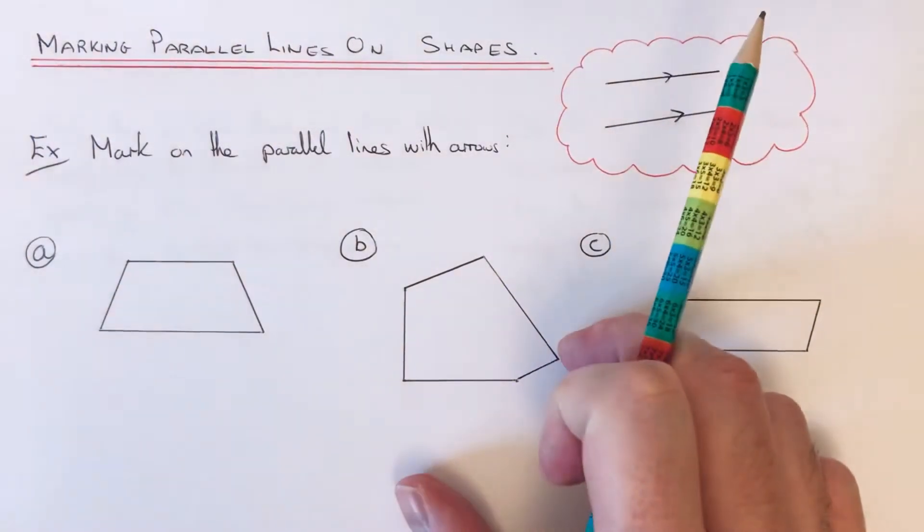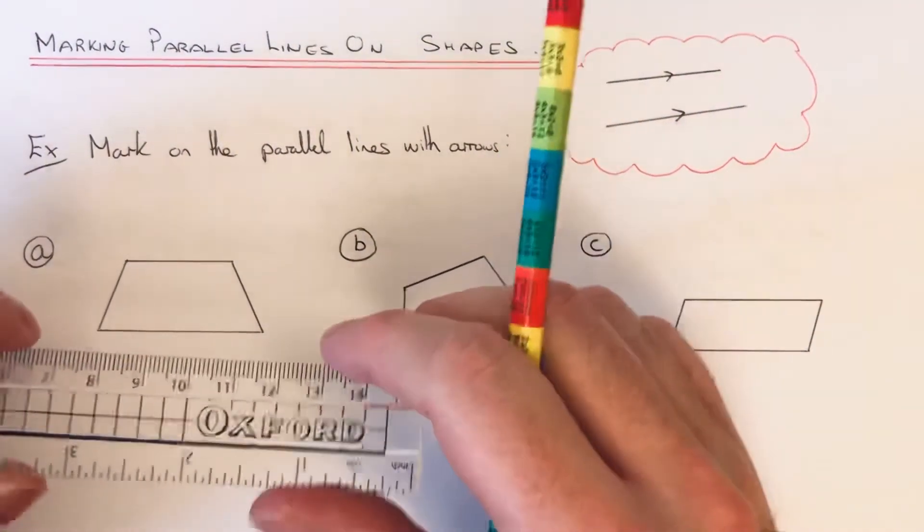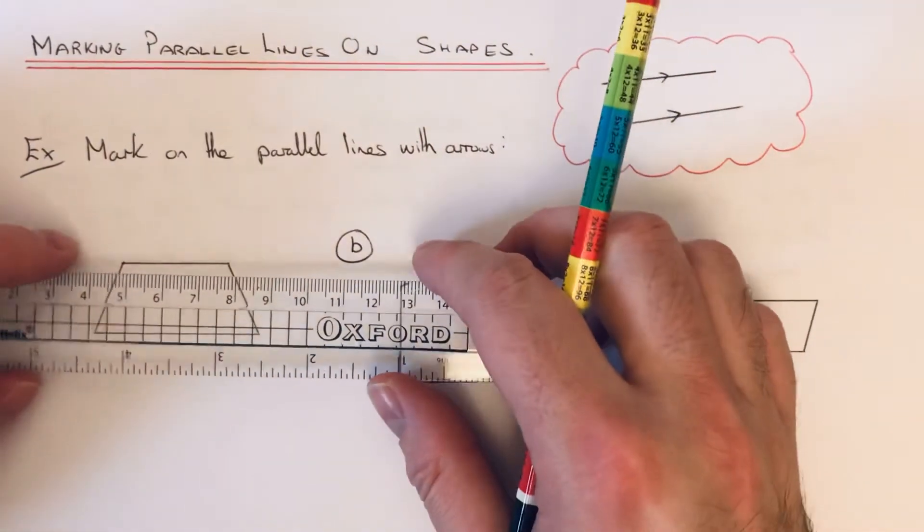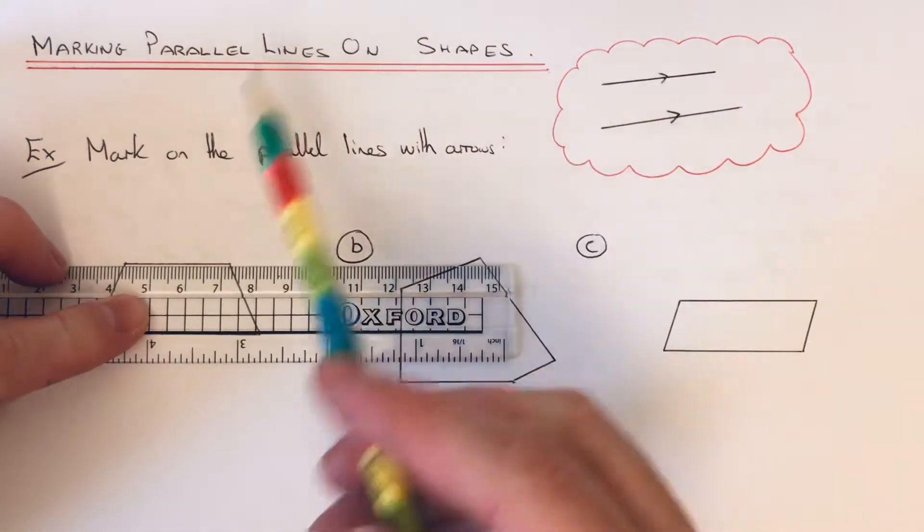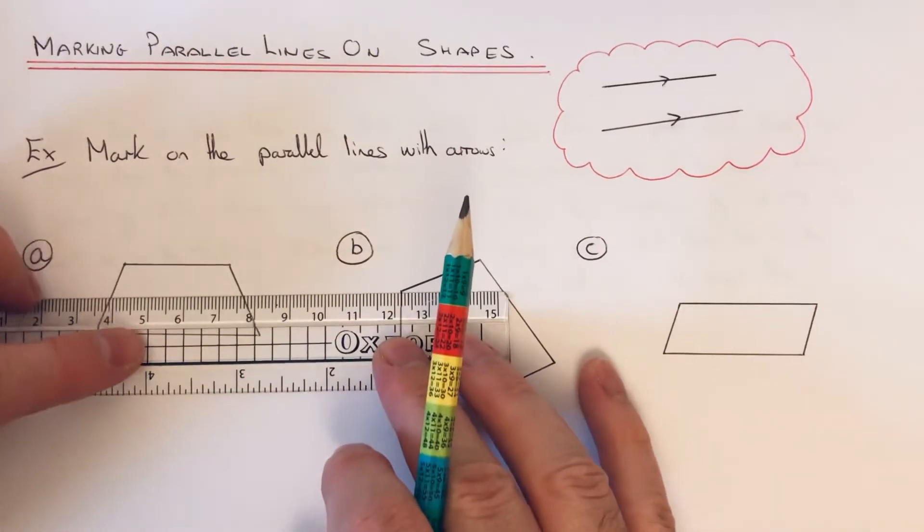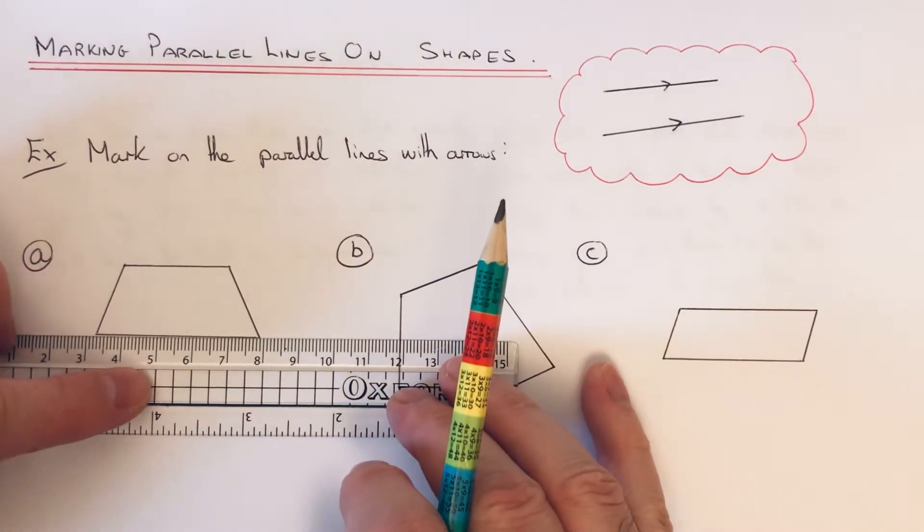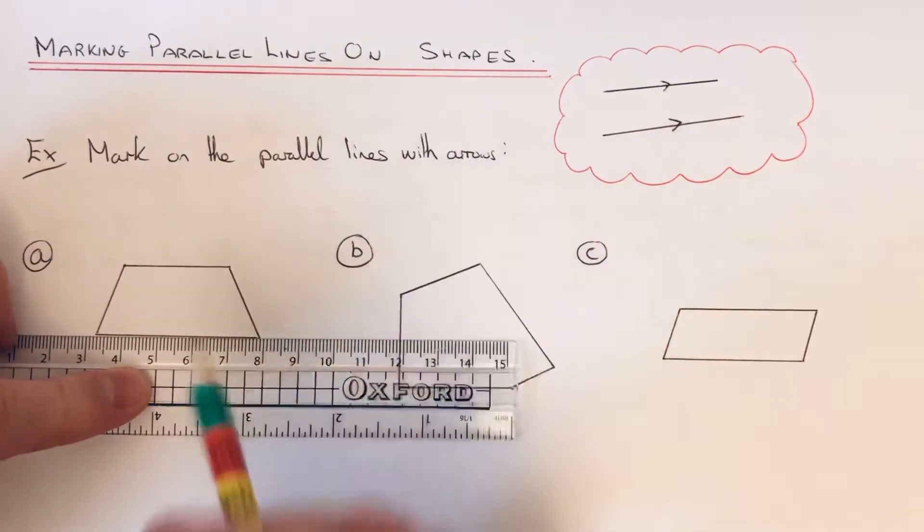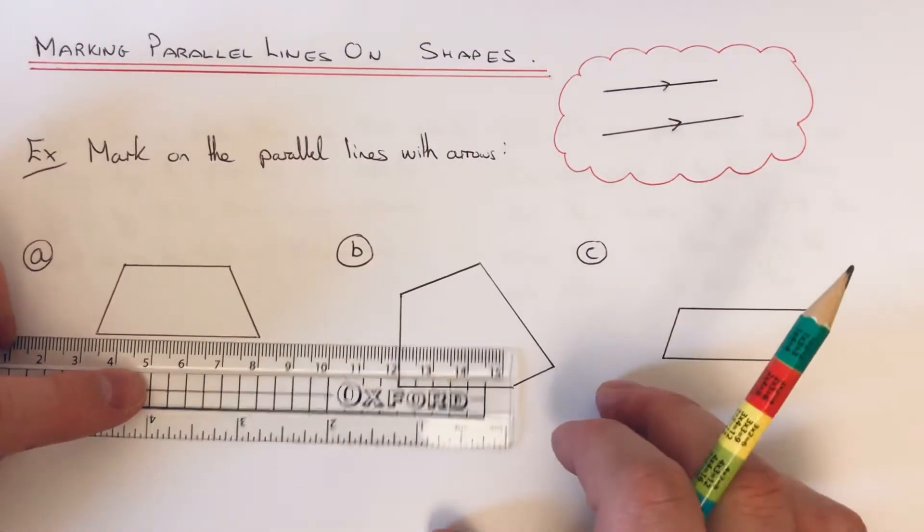The best way of doing it if you're unsure is just to get your ruler. So let's start with the top edge. You see we've got a horizontal line here, and you see the one at the bottom is also horizontal, so it's the top and bottom.